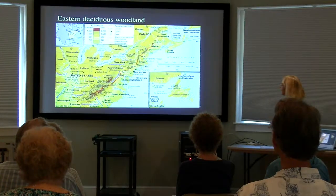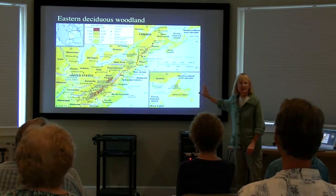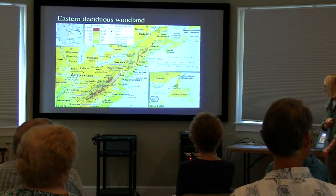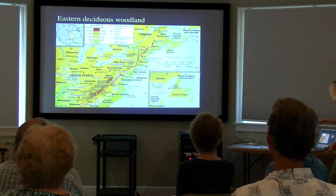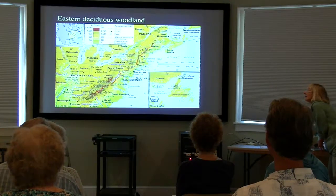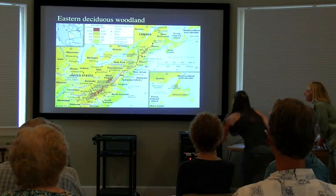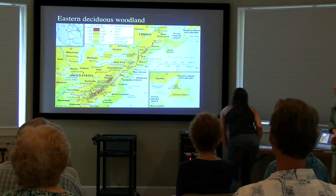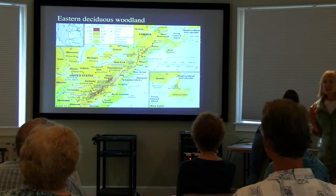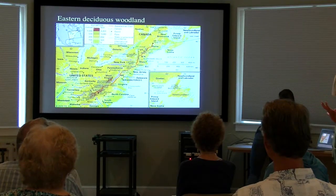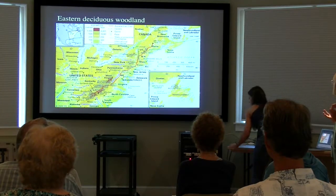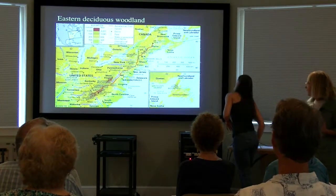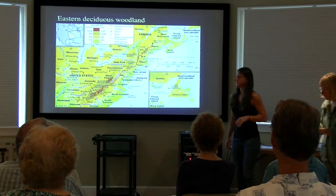Eastern deciduous woodland — we really stretch as we share a lot of the same forest types, forest communities, even the same plants.